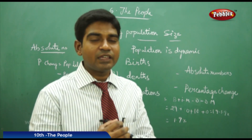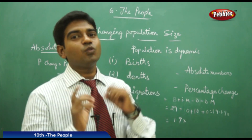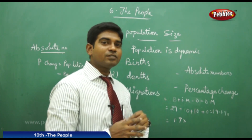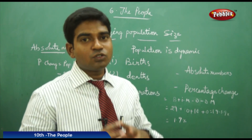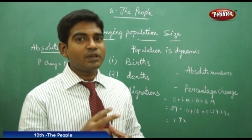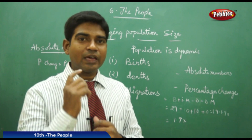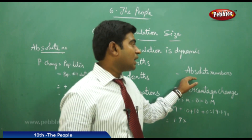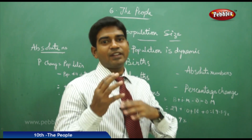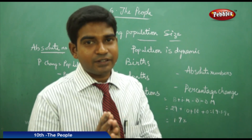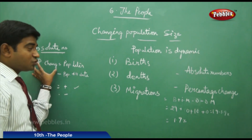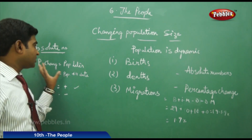Simply saying births, deaths, and migrations doesn't give us clarity on population change. Many sociologists have studied this and developed two major analysis methods. The first one is absolute numbers — how do we get the exact figures of population change? Absolute numbers use a formula: population change equals the population of the current census minus the population of the previous census.